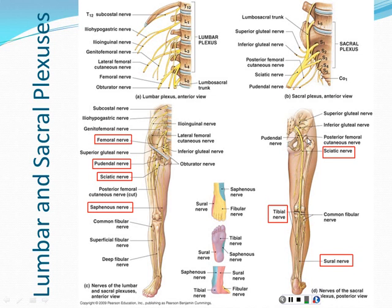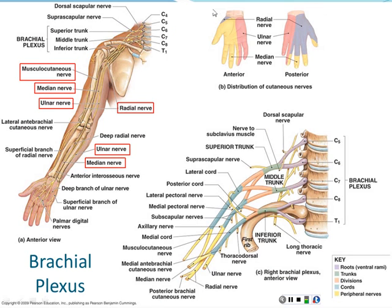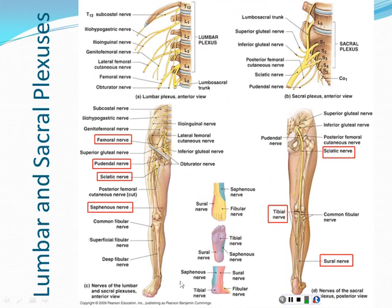Below the knee, the sciatic nerve divides into the tibial nerve and the sural nerve. Unlike the hand, you don't need to know the specific sensory distribution of the foot. Know the overall diagram of the lumbar and sacral plexuses, but it's not necessary to know which parts of the foot are supplied by which nerve.